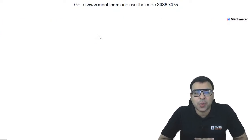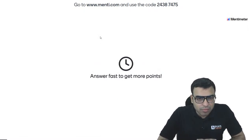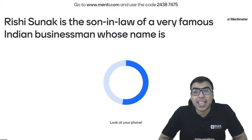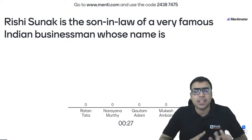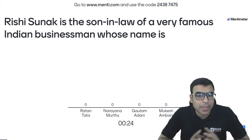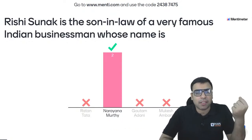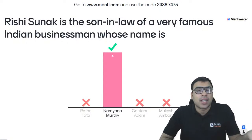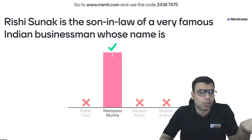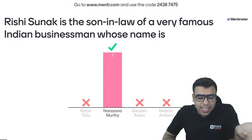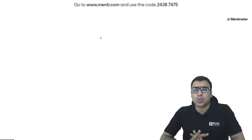Question number two: Rishi Sunak is the son-in-law of which famous Indian businessman? Options: Ratan Tata, Narayan Moorthy, Gautam Adani, Mukesh Ambani. He is the new Prime Minister of England and the son-in-law of a very famous Indian businessman. His name is Mr. Narayan Moorthy, one of the founders of Infosys — a very famous IT company. So B is the right answer to this question.